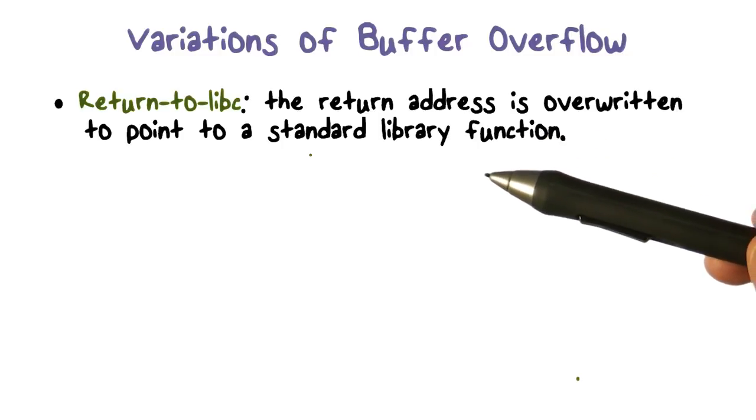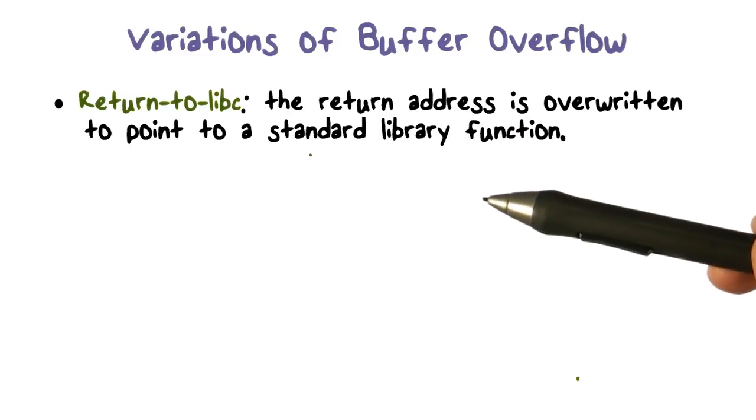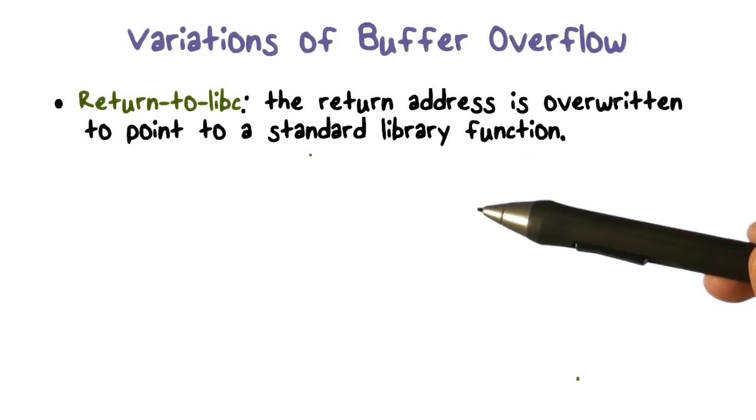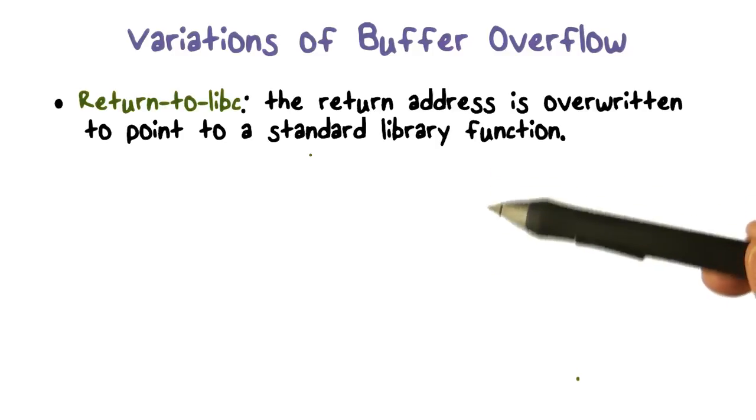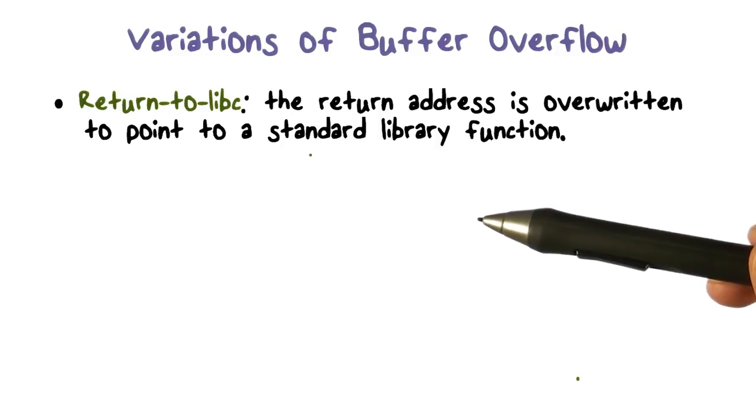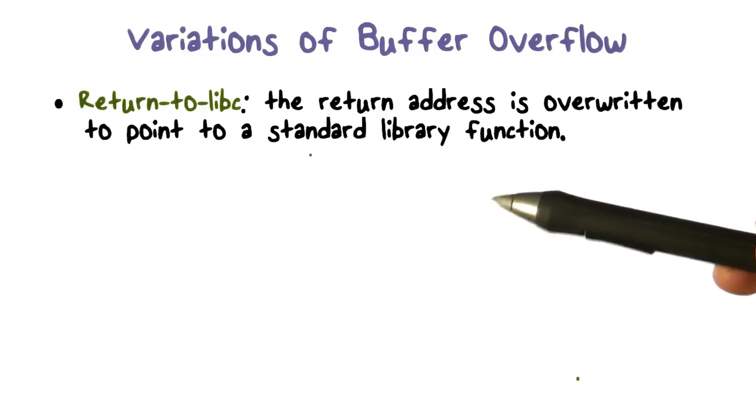So in return to libc, the thing to remember is that the return address is modified to point to a chosen library function. And we set up its input in such a way that the execution of the library function with that input allows the attacker to gain control the same way we were able to do before with shellcode.